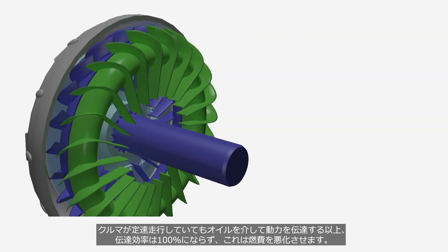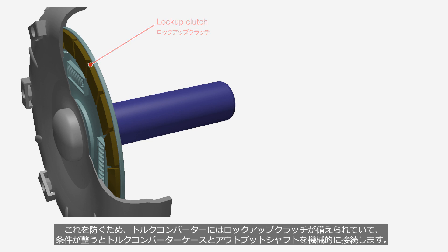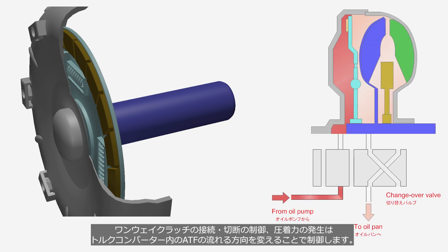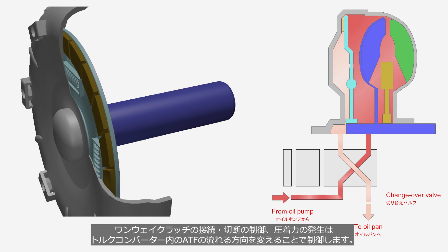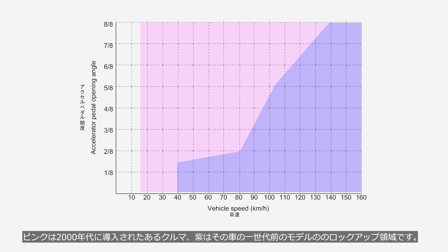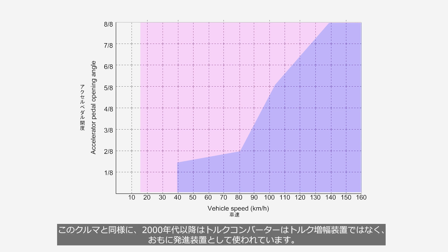Even when a car is cruising at a constant speed, because oil is used for power transmission, 100% efficiency can't be achieved, leading to decreased fuel efficiency. To prevent this, the torque converter is equipped with a lock-up clutch. Under certain conditions, the lock-up clutch mechanically connects the torque converter case to the output shaft. Control of engagement and disengagement, and the generation of clamping force, are achieved by altering the direction of ATF flow. A graph illustrates the lock-up range based on vehicle speed and accelerator pedal opening angle. Since the 2000s, torque converters have been primarily used as a launch device rather than a torque amplification device.